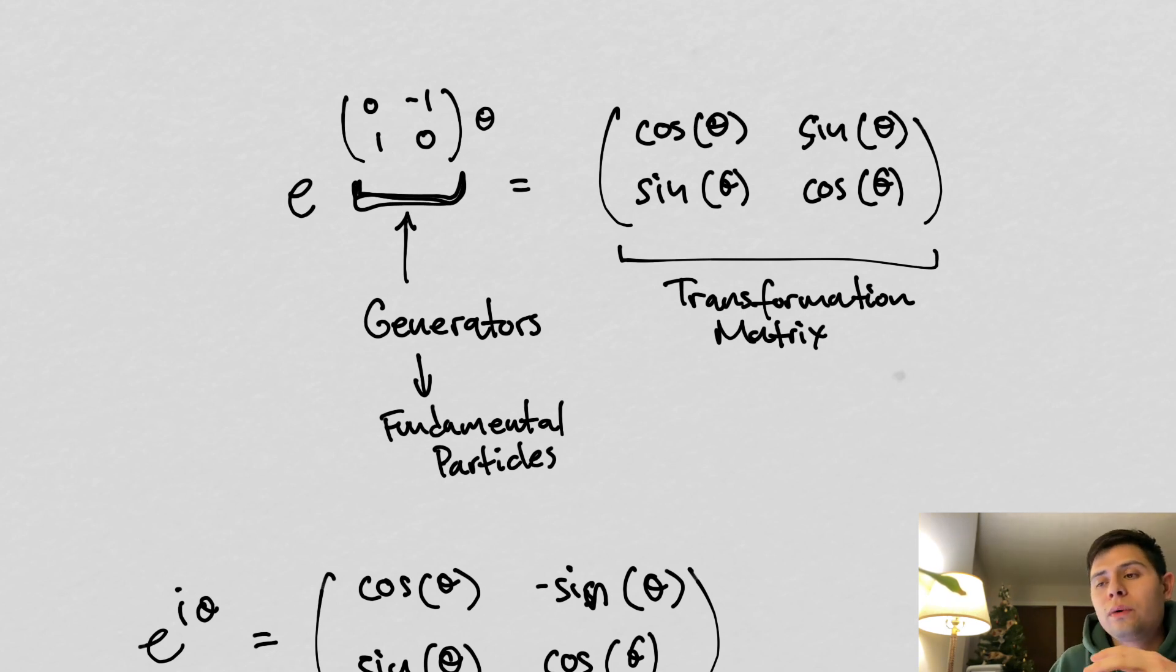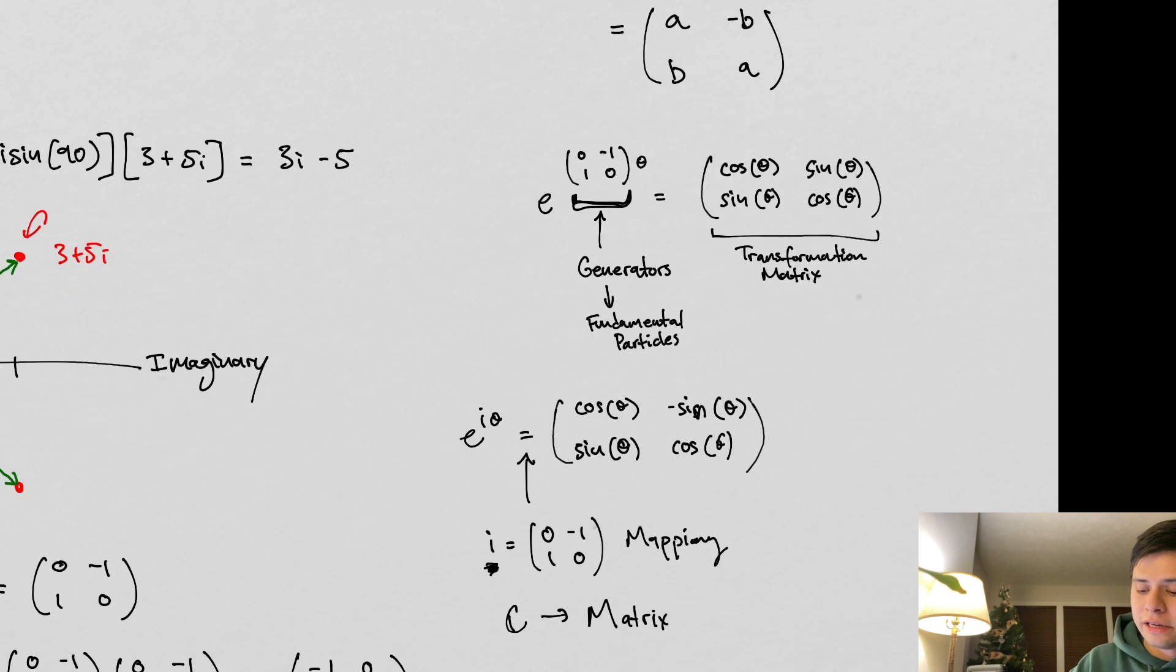Such that when you exponentiate a generator, you get their associated transformations. This is the transformation. Generators are going to be associated with fundamental particles. When we think about transformations of some system, the things that remain invariant under some transformation—immediately when we think transformation, we want to think generators. When we think generators, we want to think: these generators are associated with something physical. This is the fundamental link between modern physics and advanced complex mathematics.